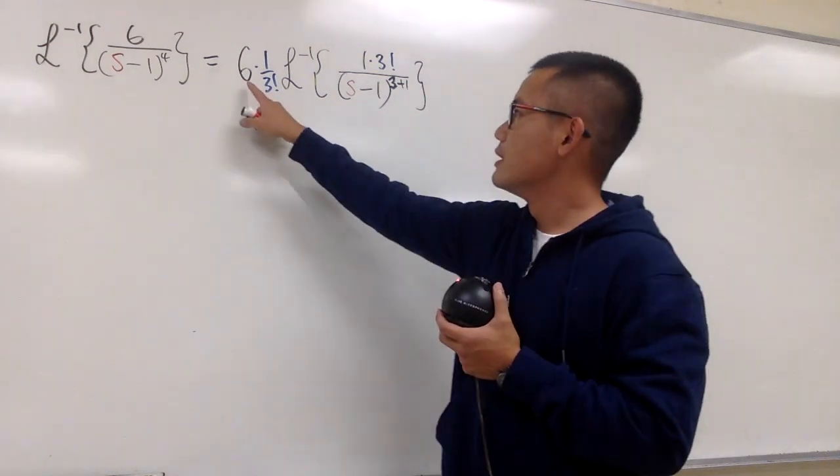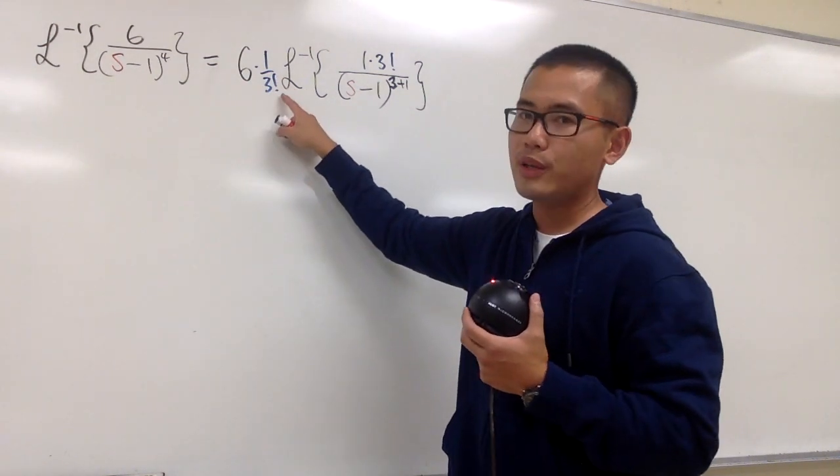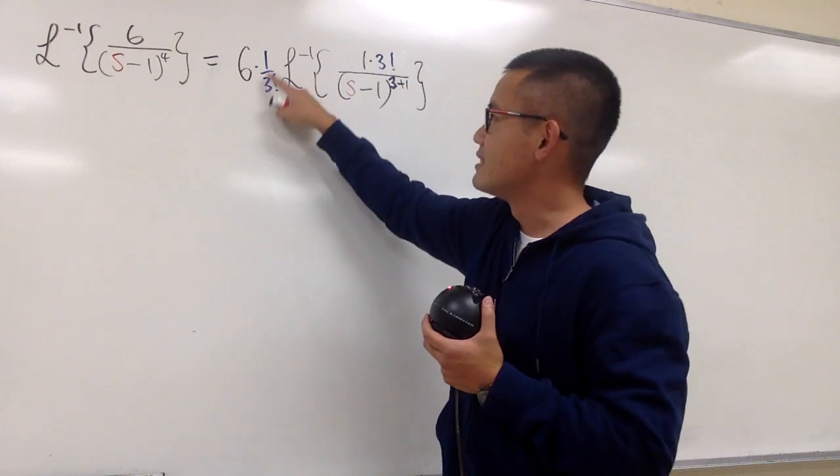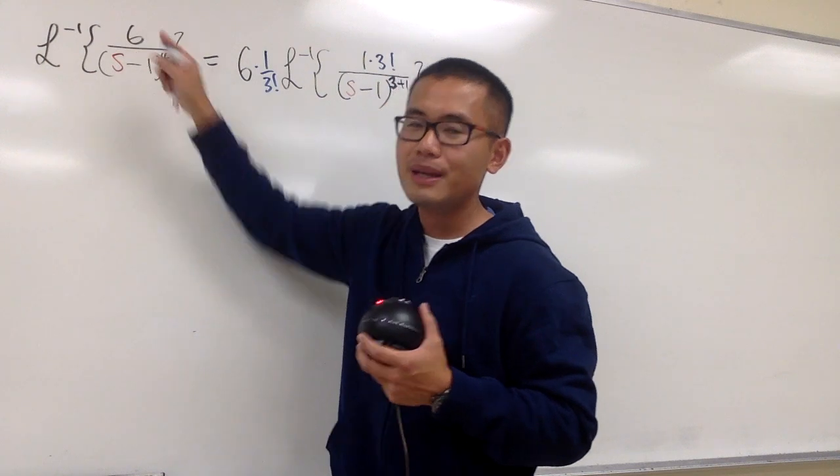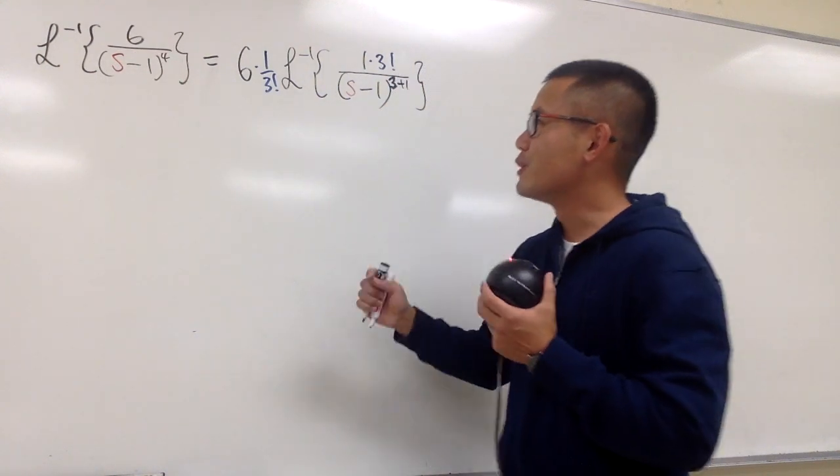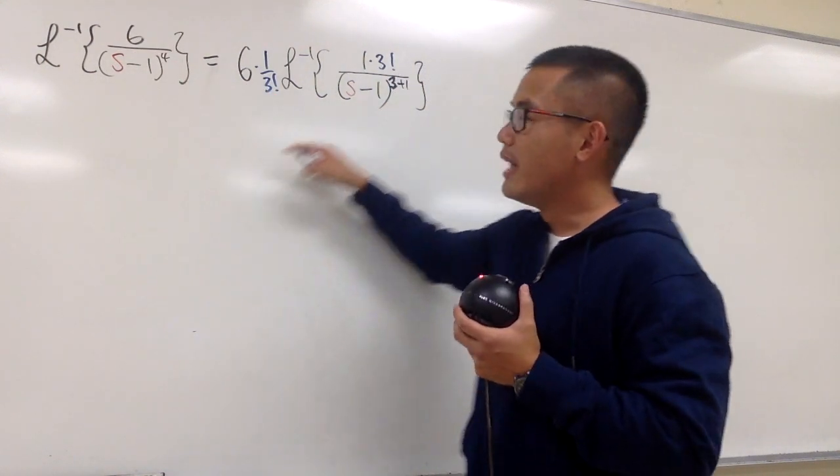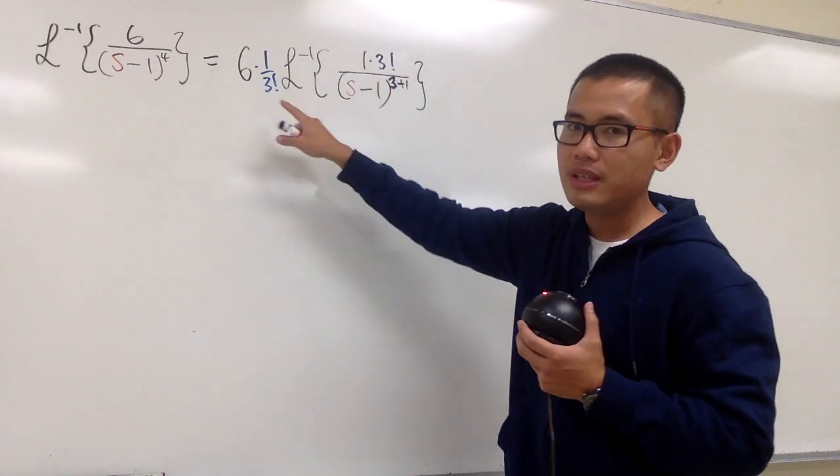And if you notice, 6 times 1 over 3 factorial, they pretty much cancel out, because this is the same as 1 over 6. And yes, you could have kept the 6 earlier on the top, but once again, you should just bring the 6 to the front, and then manufacture the factorials that you need, and divide it out.